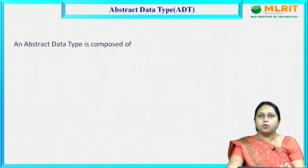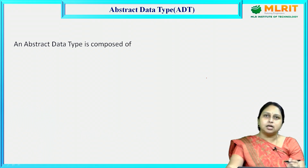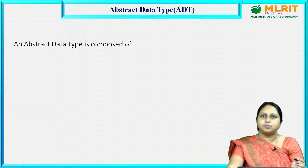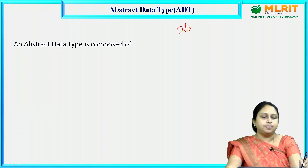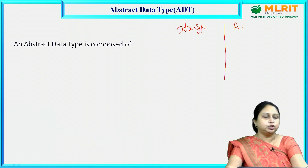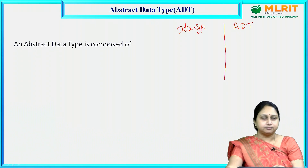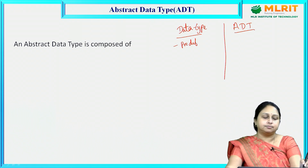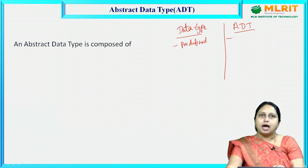Let us look into the next important concept: Abstract Data Type (ADT). Before that, let us see the difference between a data type and an abstract data type. A data type is a predefined one, whereas an abstract data type is a user-defined one.